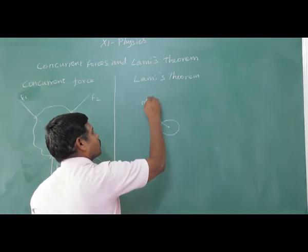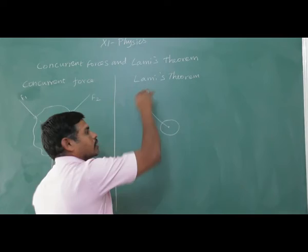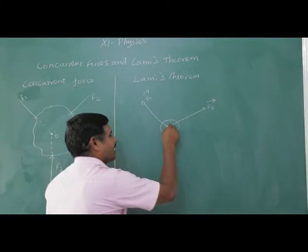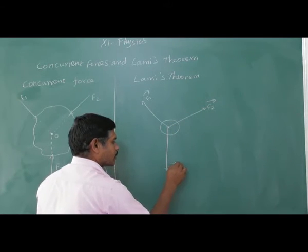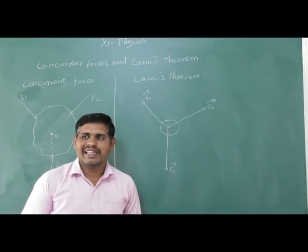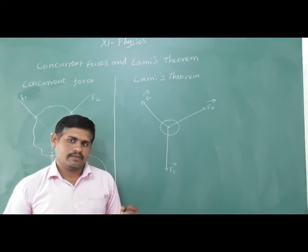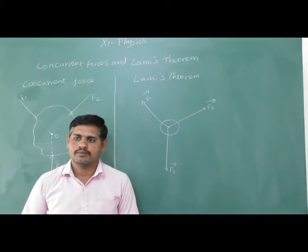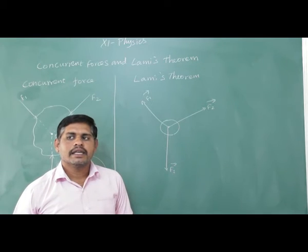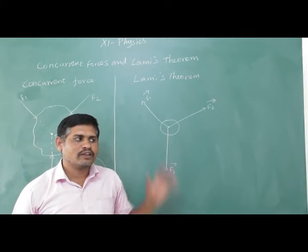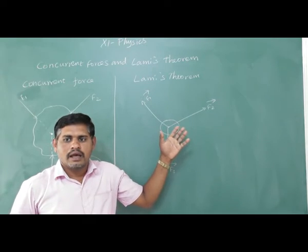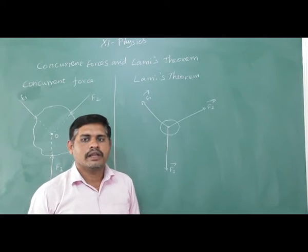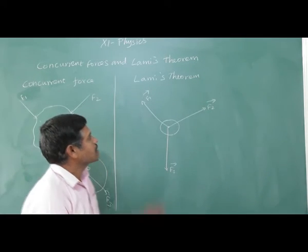Consider force F1 vector, another force F2 vector, and another force F3 vector — three forces acting at a common point, which is a concurrent force in equilibrium state. The magnitude of each force is directly proportional to the sine of the angle between the other two forces.